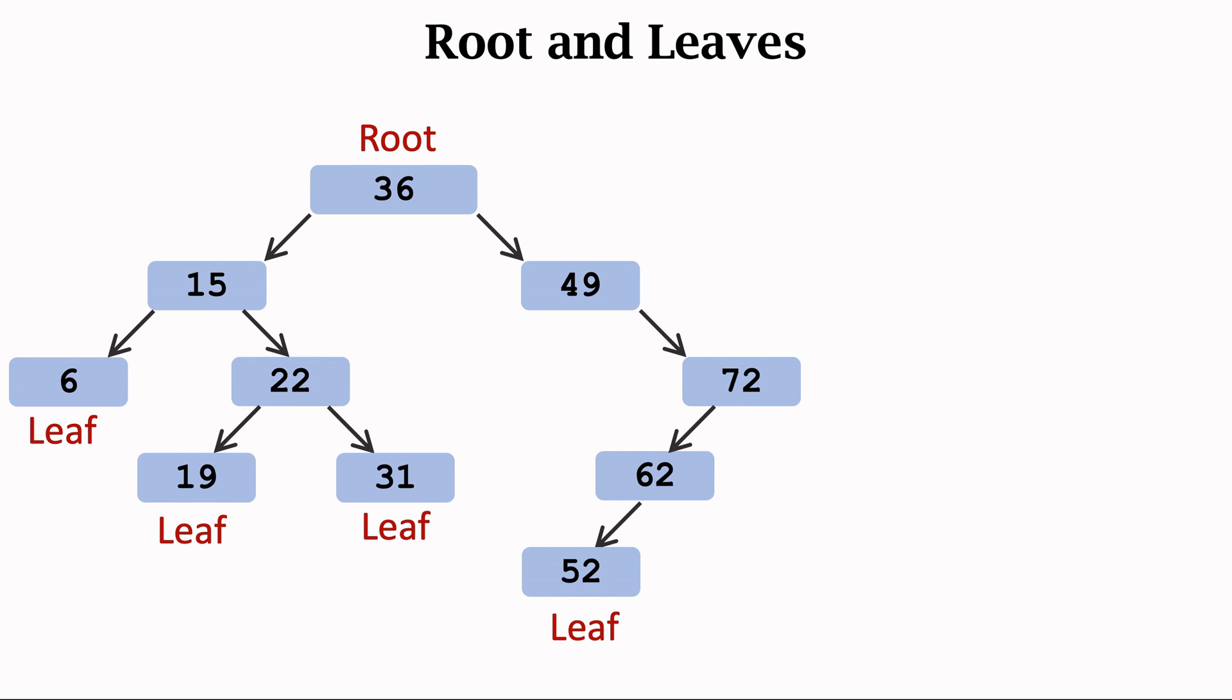The root and leaves are illustrated in the figure. This is the root. The four vertices are leaves. The tree grows from the root to the leaves. The tree is actually upside down. It's just a convention.